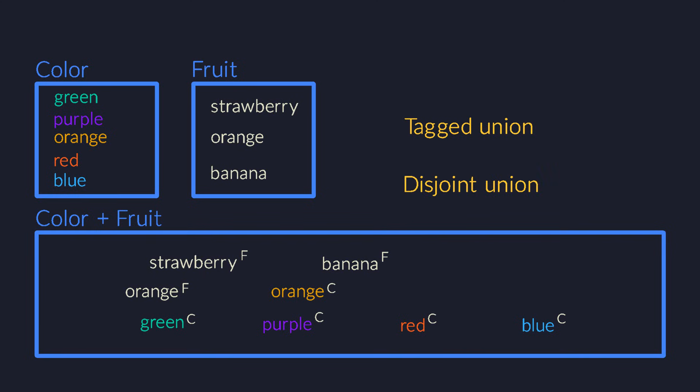You can now see why it's called the sum type. It has the sum of the number of elements of the original two sets.